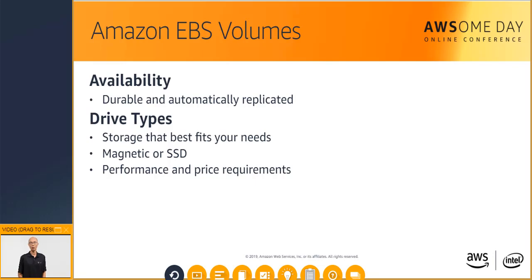Amazon EBS volumes are designed to be durable and available — the data in a volume is automatically replicated across multiple servers running in the same AZ. EBS is actually more durable than a physical device because of block-level replication. While creating an EBS volume, you can select the type of storage that best fits your needs — magnetic or SSD — based on your performance and price requirements. For example, if you are running a database instance, you can configure it to use a secondary SSD volume for data and assign a cheaper magnetic volume for logs.